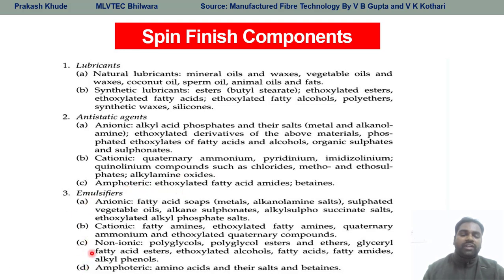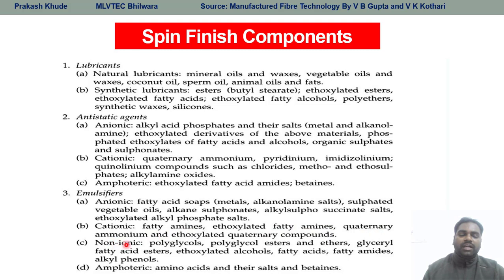In terms of emulsifiers, there are anionic and cationic emulsifiers. Examples of anionic emulsifiers include fatty amine ethoxylates and ethoxylated fatty amines. For non-ionic examples: glycerine, fatty acid esters, and amphoteric types include amino acids and their salts and betaines.